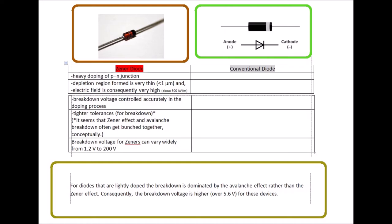From what I gather, it seems that sometimes when speaking about Zener diodes, the Zener effect can get bunched together with avalanche. Even though maybe that's not technically correct. Right or wrong. Maybe you disagree. Breakdown voltage for Zener's can vary widely from 1.2 volts to 200 volts.